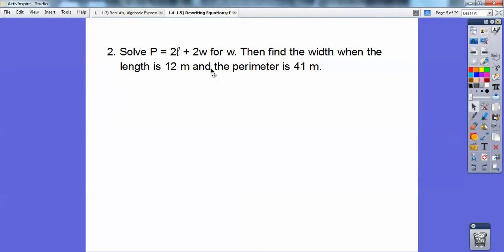Okay, this one. Where does this one come from? Solve P = 2l + 2w. That's perimeter equals twice the length plus twice the width. So that's the perimeter of a rectangle right there. We're going to solve this for w and then find the width when the length is 12 meters and the perimeter is 41 meters.